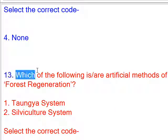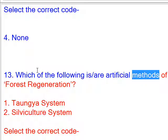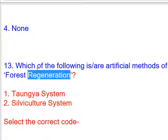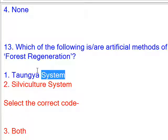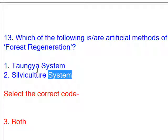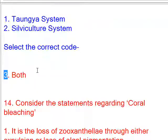Which of the following is/are artificial methods of forest regeneration? 1. Taungya system, 2. Silviculture system. Select the correct code. Answer: Both.